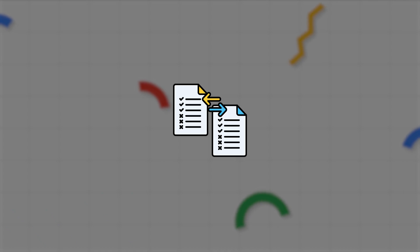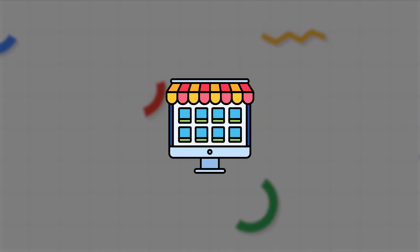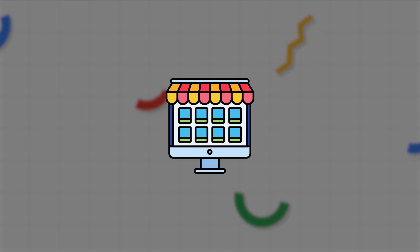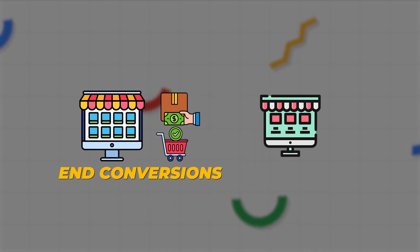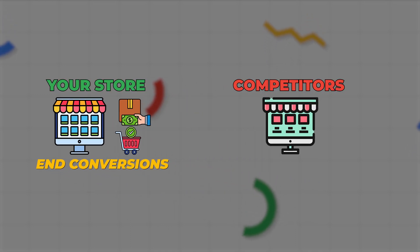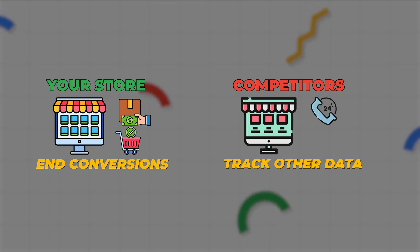Taking this a step further, the other issue is that it's comparing data which may not be the same as yours. In your store, you may only be interested in end conversions — so purchases and transactions — versus your competitors who are also happy to track other conversion data as primary conversions like click-to-calls or even store visits. So Google is giving you a recommendation of how much each conversion should cost, but it is using different types of conversions to give you that data.